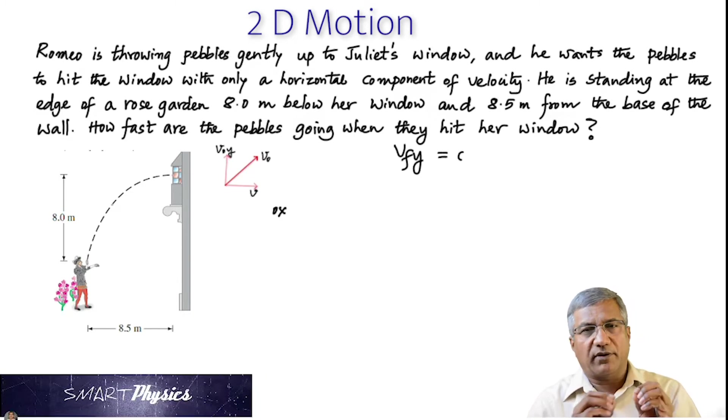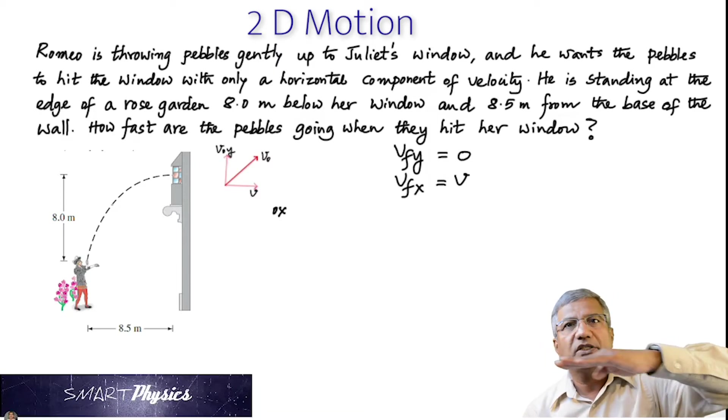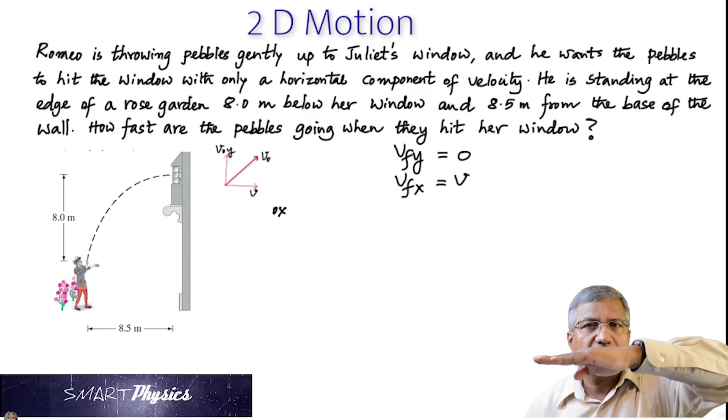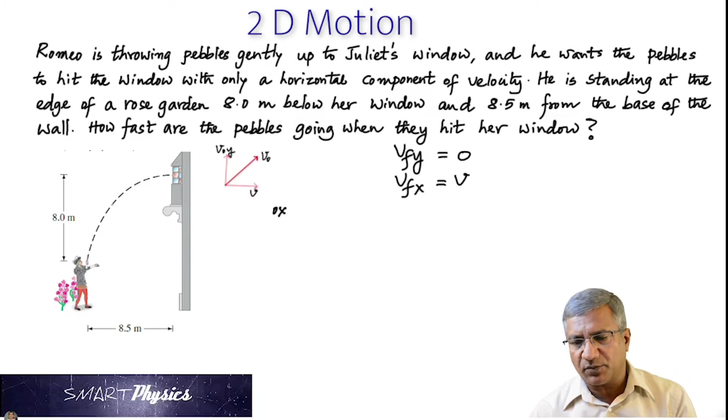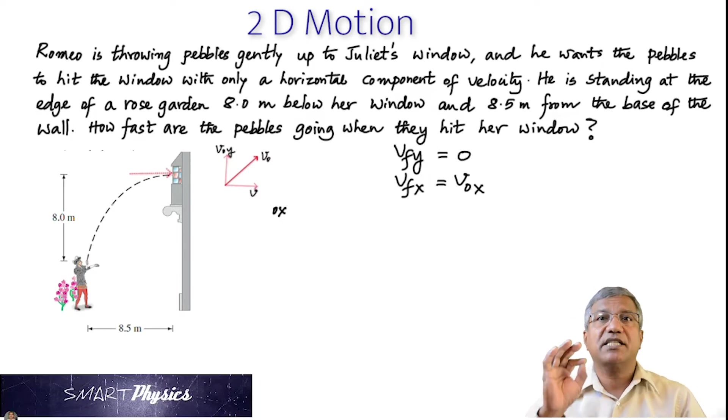So the final vertical velocity is going to be 0 because when it hits, it's hitting horizontally, right? So it has no vertical component. So the final Y velocity is 0 and the final X velocity is the same as the initial X velocity. See that? Because the X velocity does not change. That is a key point in understanding this question.